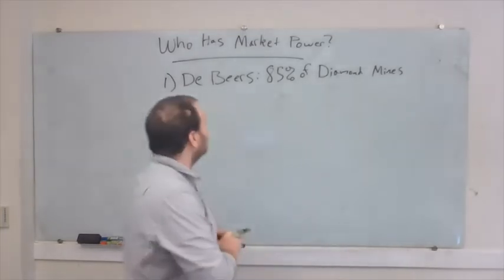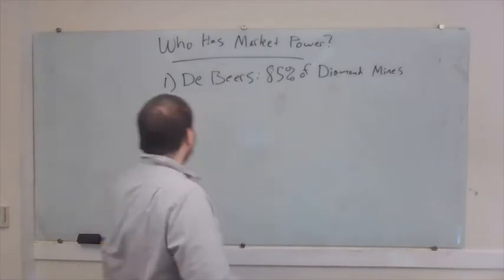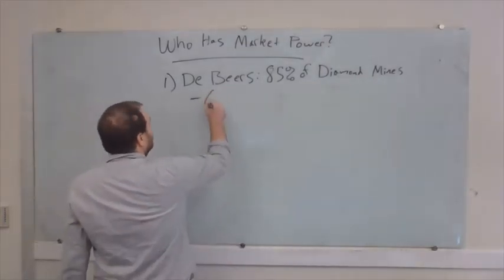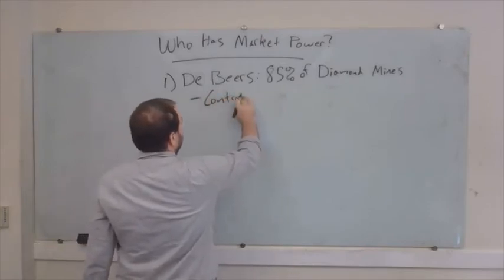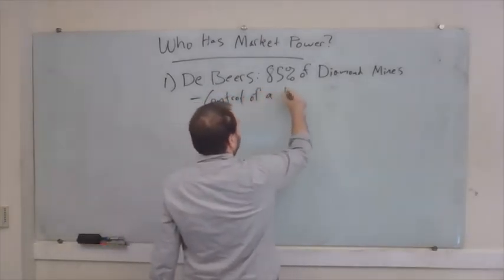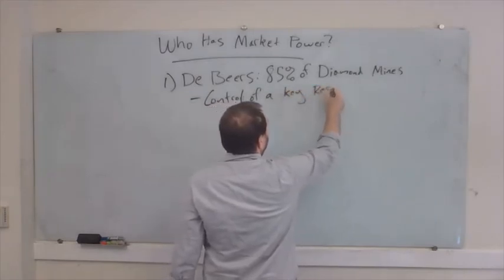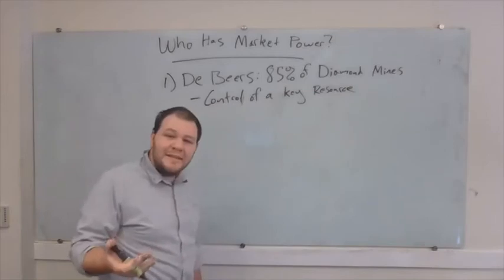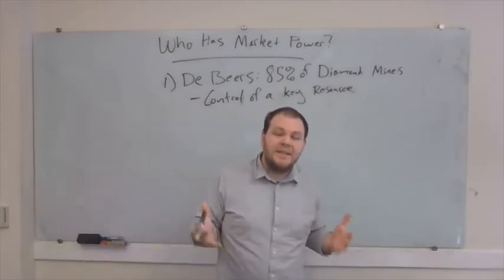So where did their monopoly come from? What power gave them this monopoly? Effectively, the power was that they had control of a key resource — they owned all the diamond mines. And so as a result, they were able to set the price of diamonds. You might see the high price of diamonds and love to get into the diamond industry, but you can't get into the diamond industry without owning any diamond mines.